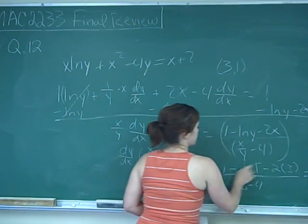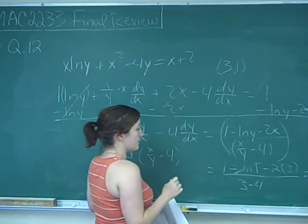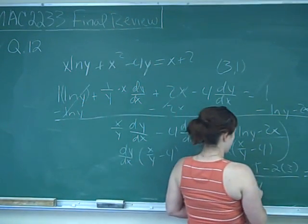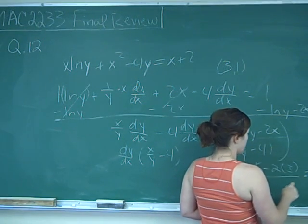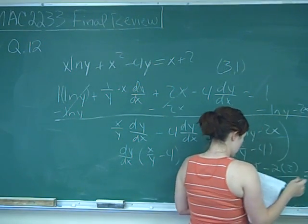So the slope, ln of 1 we know is 0, is 1 minus 6, so that's negative 5 over 3 minus 4, which is negative 4. So our slope is 5/4.